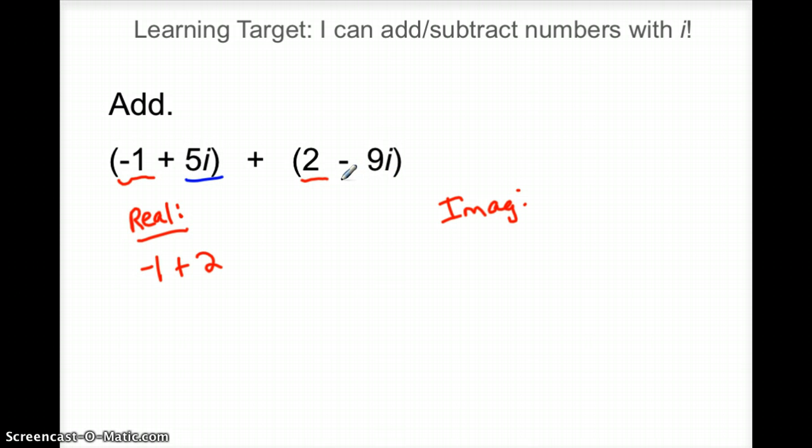The imaginary parts, be careful here. We're taking 5i plus, because of the minus in that second group, we're going to compensate and think of it as a negative 9i, so that way we don't lose a sign. So when I add the real stuff together, that adds to a positive 1. When I add the imaginary stuff, 5 plus a negative 9, gives me a negative 4i.